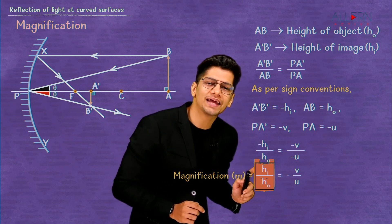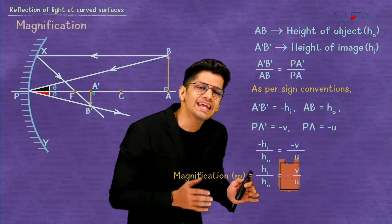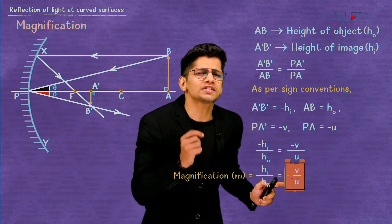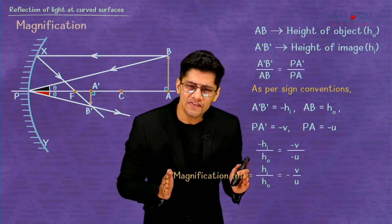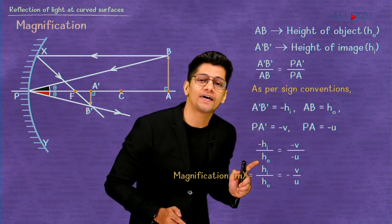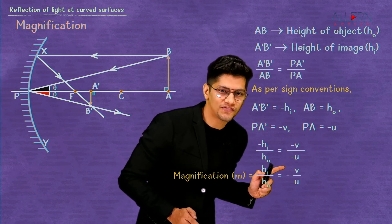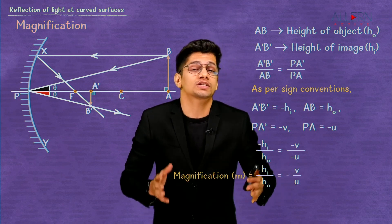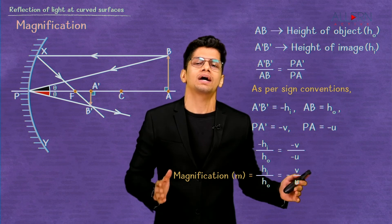So magnification m, which is the ratio of the height of the image to the height of the object, is also equal to the negative of the ratio of the image distance to the object distance: m = hi/ho = −v/u. This is the magnification formula, which is very important for solving numerical problems.